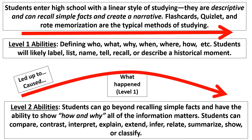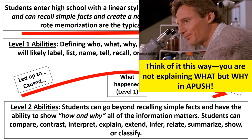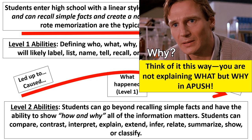Then you go into what happened itself — this is the part most people using rote memorization only concentrate on, neglecting the 'led up to' and the 'caused' part. Finish with the effects and the long-term impact. By doing this, you're going beyond recalling facts and showing how and why information actually matters — you're comparing, contrasting, extending, and inferring. One of my best students always thought of it this way: you're not telling me what something is, but why something is important.